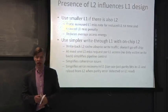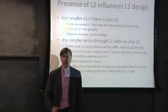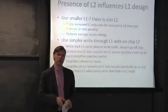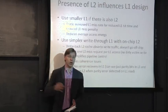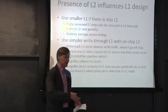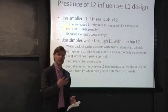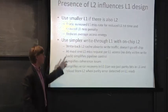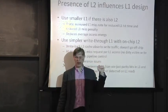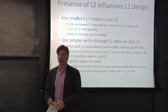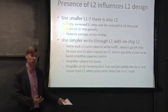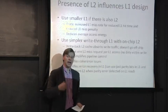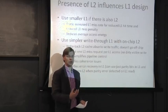Another way level two presence influences level one is that you can use a much simpler level one cache design. In an old single-cache design, the level one might be a write-back cache that stores dirty data — when a cache conflict occurs, it has to find a victim, evict it, and wait for the bandwidth for that eviction. With a level two cache backing the level one, you can actually move to a write-through design. If you only had one cache level and did write-through, every write would have to go out to main memory, and there isn't enough bandwidth for that.